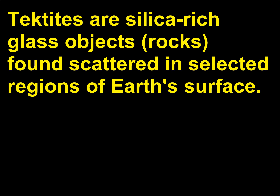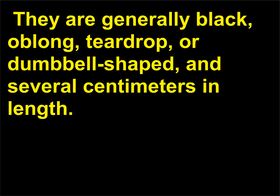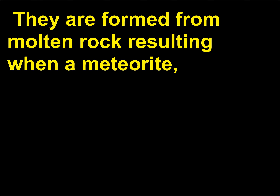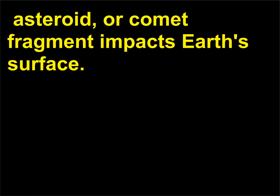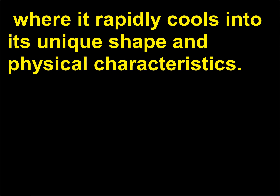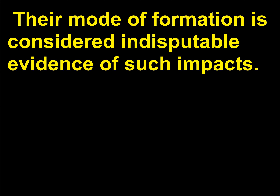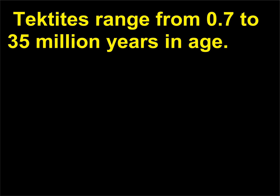Tektites are silica-rich glass objects found scattered in selected regions of Earth's surface. They are generally black, oblong, teardrop, or dumbbell-shaped, and several centimeters in length. They are formed from molten rock resulting when a meteorite, asteroid, or comet fragment impacts Earth's surface. The molten rock is hurled high into the atmosphere, where it rapidly cools into its unique shape and physical characteristics. Their mode of formation is considered indisputable evidence of such impacts. Tektites range from 0.7 to 35 million years in age.